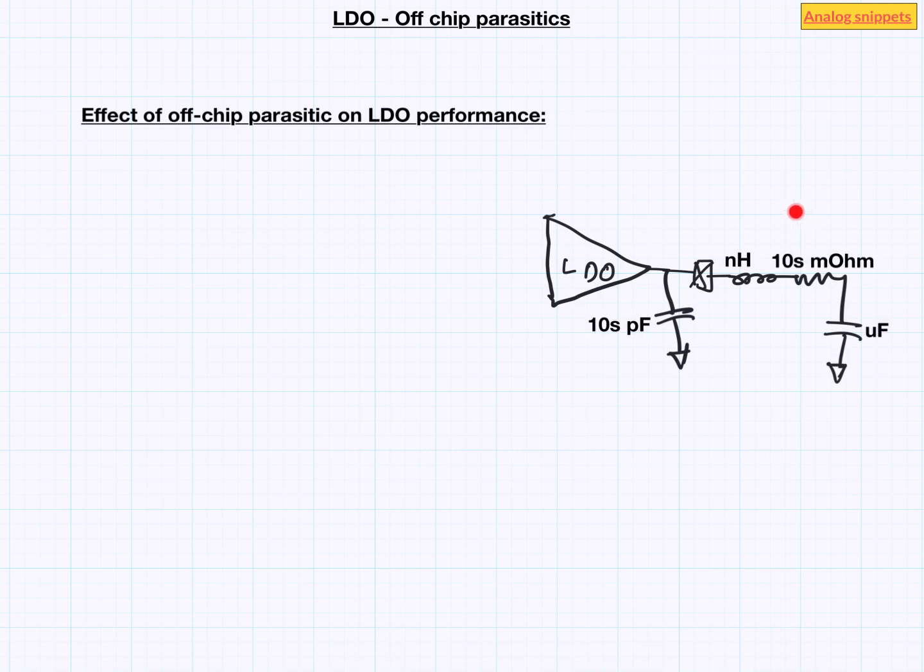One obvious effect of adding all this parasitic is to increase the order of the loop. We are replacing a first order capacitor with a third order RLC network.